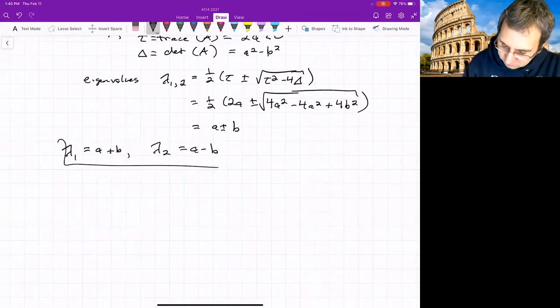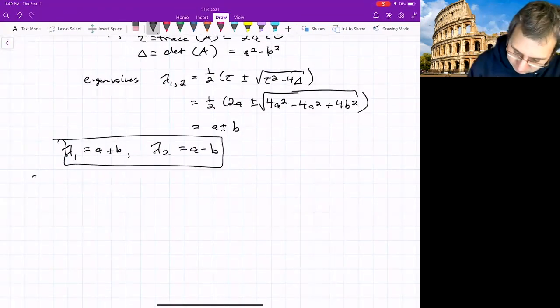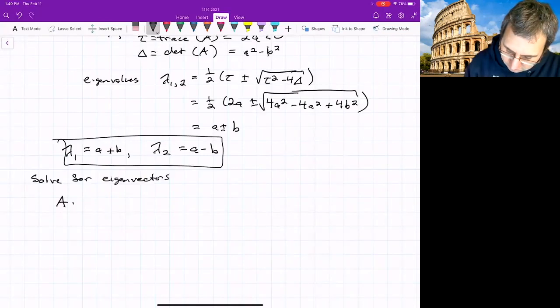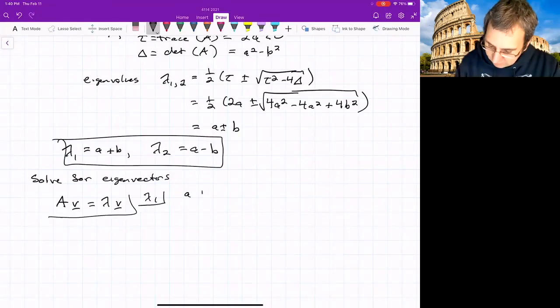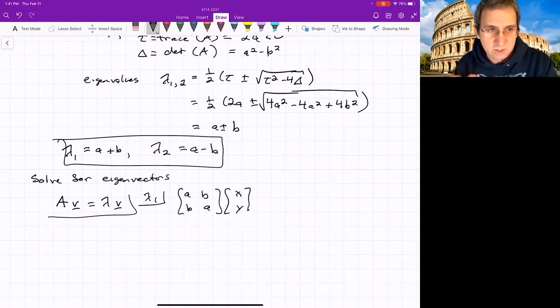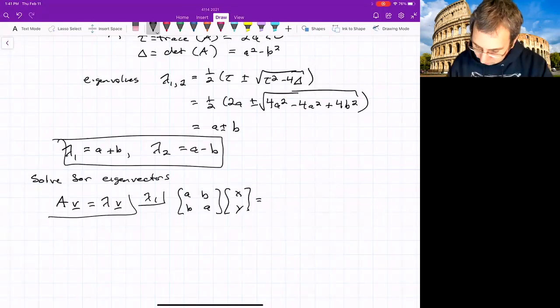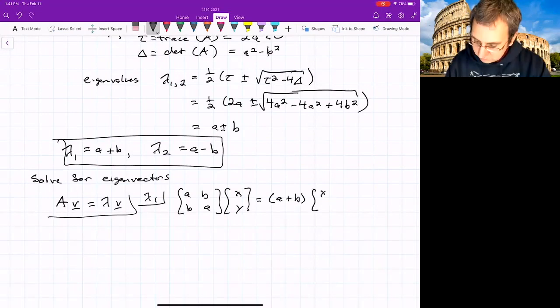Here we've solved for the eigenvalues. Now we can solve for eigenvectors. So A, V equals lambda V, remember. So let's do that for lambda 1. A, B, B, A. So here X and Y will be directions along V1. I want to find out what V1 is. This equals lambda 1, which is A plus B, X, Y. Do the matrix multiplication.